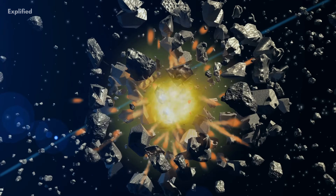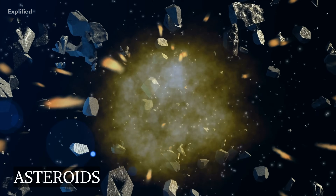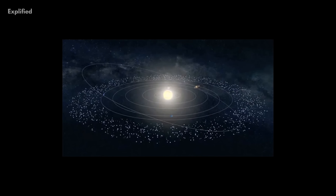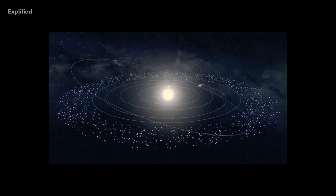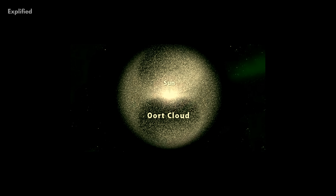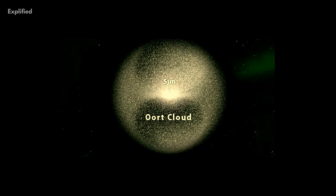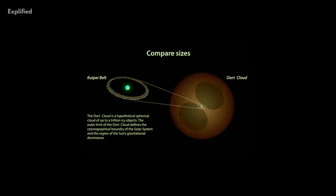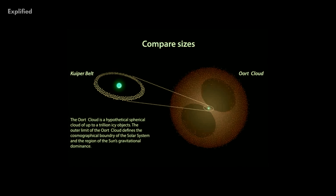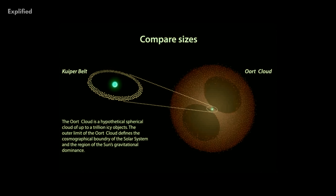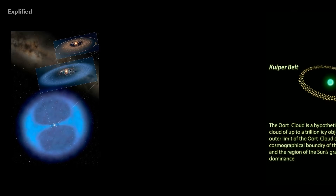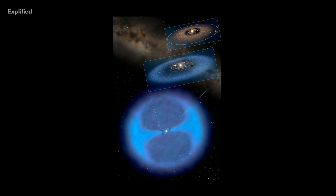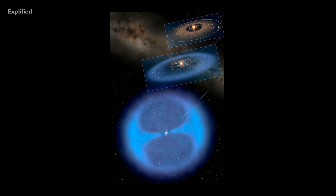On the other hand, the Oort Cloud mainly consists of asteroids, comets, and space debris. The Kuiper Belt is the main source of short-term comets whereas the Oort Cloud is the main source of long-term comets. Both the Kuiper Belt and the Oort Cloud are an integral part of our solar system. Although they are very similar at times, it is also quite easy to tell them apart.